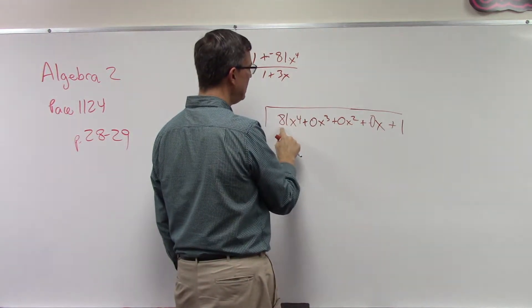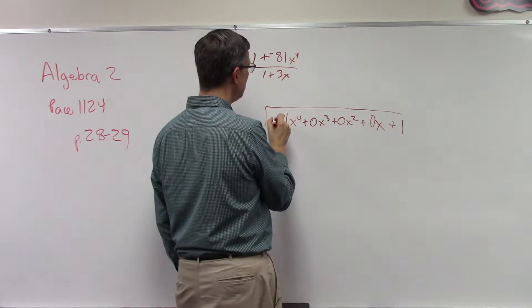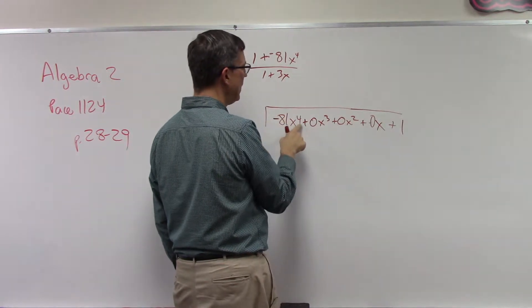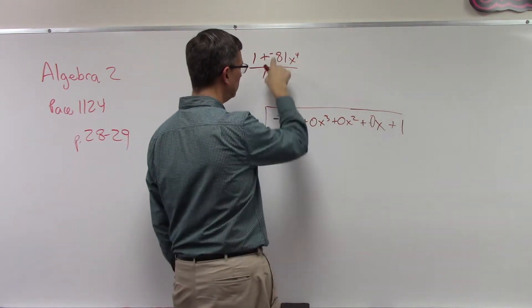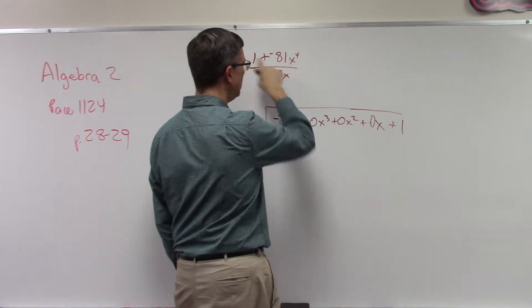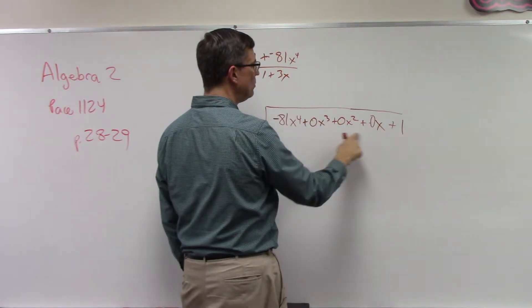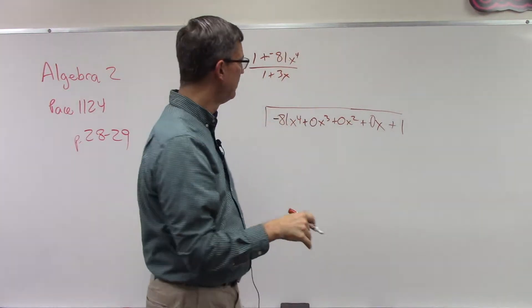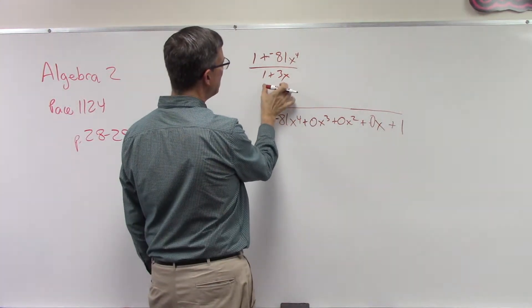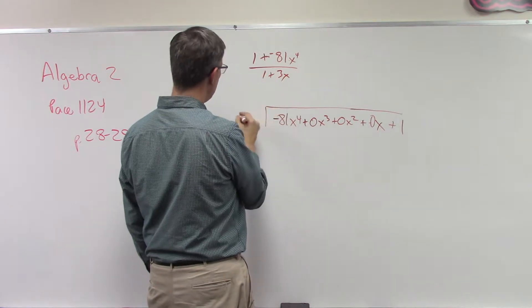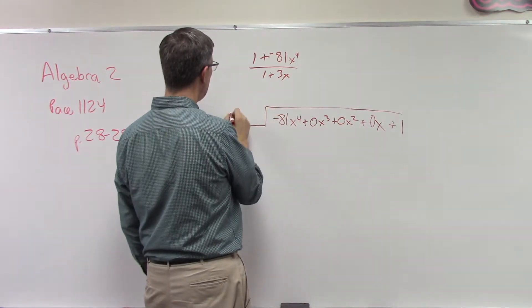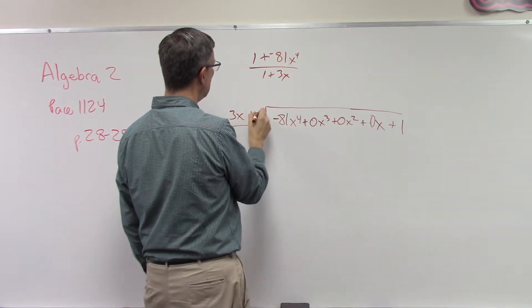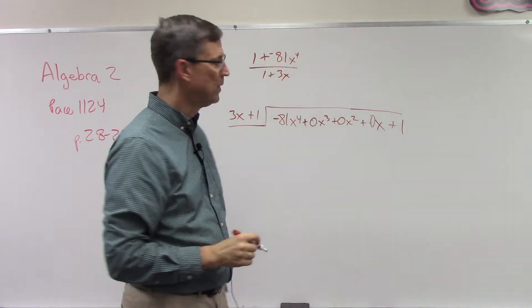All right, so these three terms were missing. Up here I have the 81, oops I need to put the negative here, negative 81x to the fourth, and then here's the plus 1. All of these are zeros so they're really just placeholders so that as I divide I have a column to put them in.